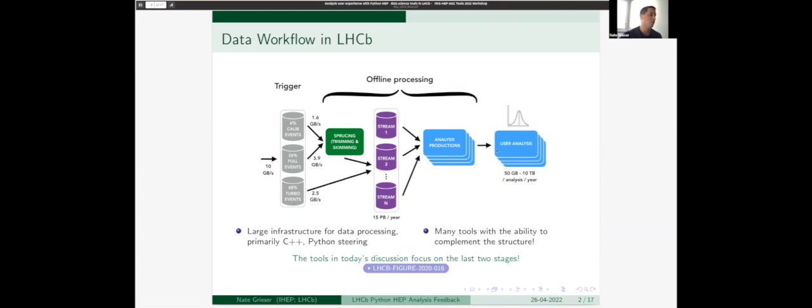We have quite a large infrastructure for the data processing. As you can see, we have our trigger. We do some sprucing, trimming, and skimming of these files, and then output these into streams. And these move on to an analysis production stage, which produces n-tuples and smaller file formats, which analyzers then use in their user analysis.